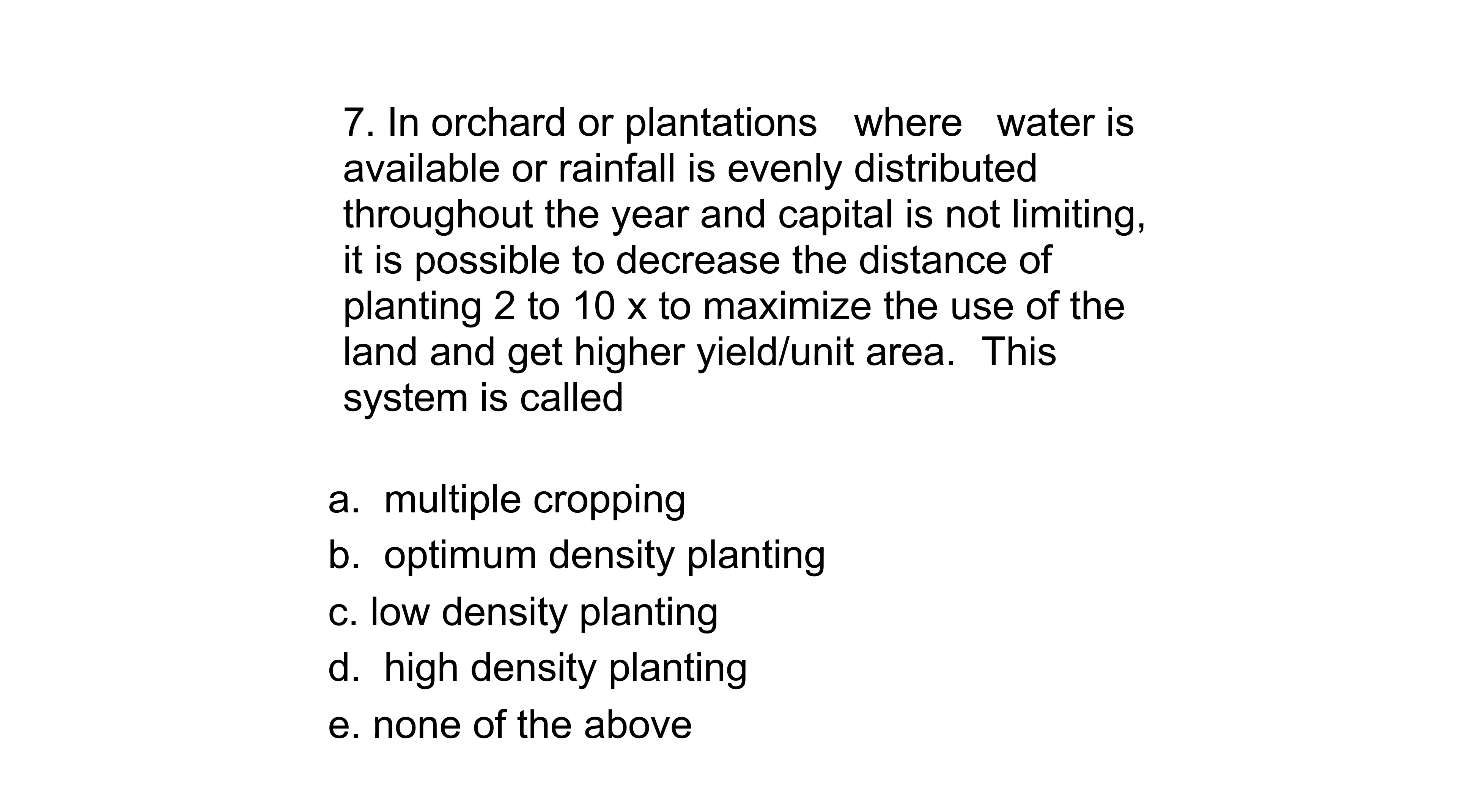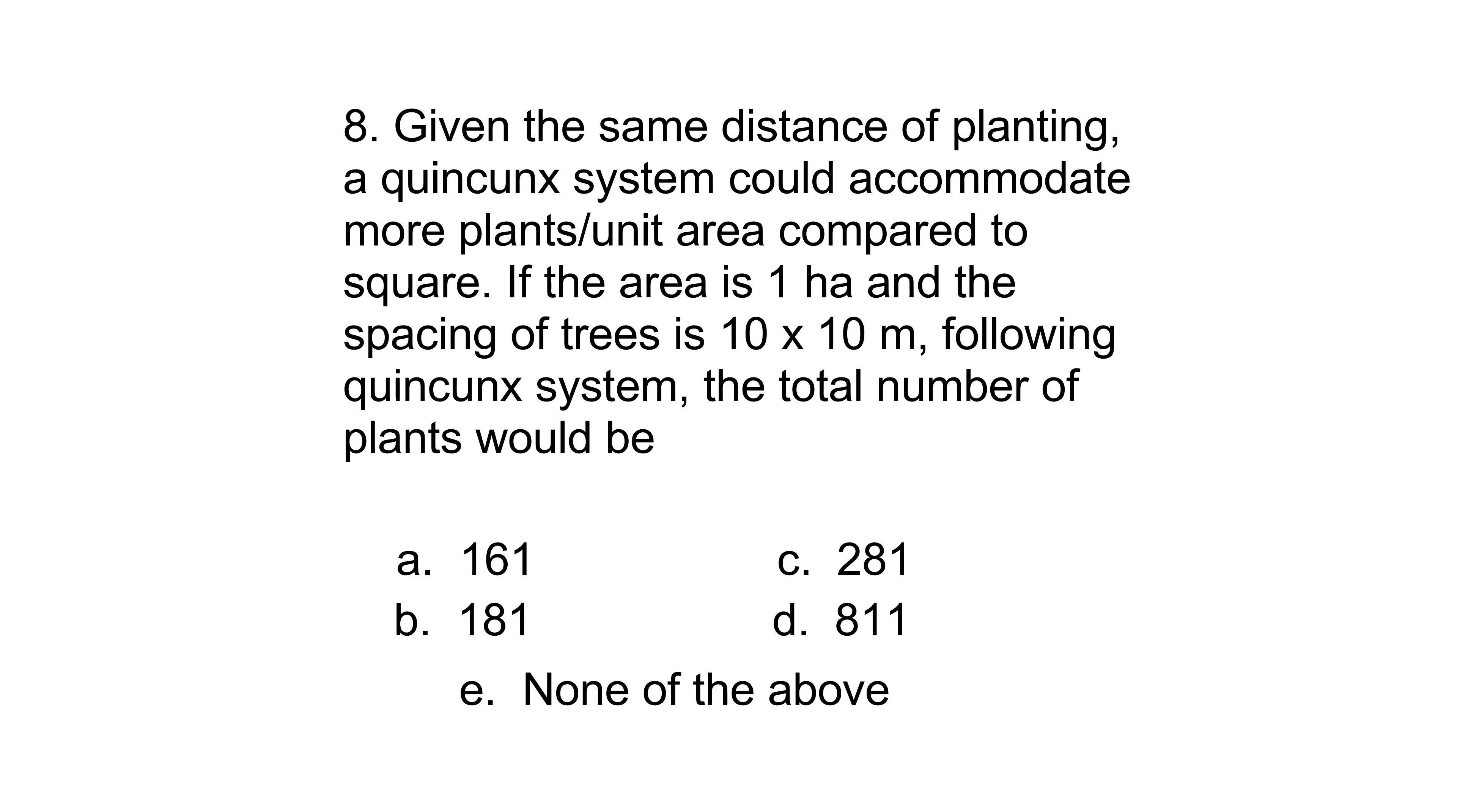Number seven: When rain is evenly distributed throughout the year and capital is not limiting, it is possible to decrease the distance of planting two to ten times to maximize the use of the land and get higher yield per unit area. This system is called multiple cropping, optimum density planting, low density planting, high density planting, or none of the above. The answer is high density planting.